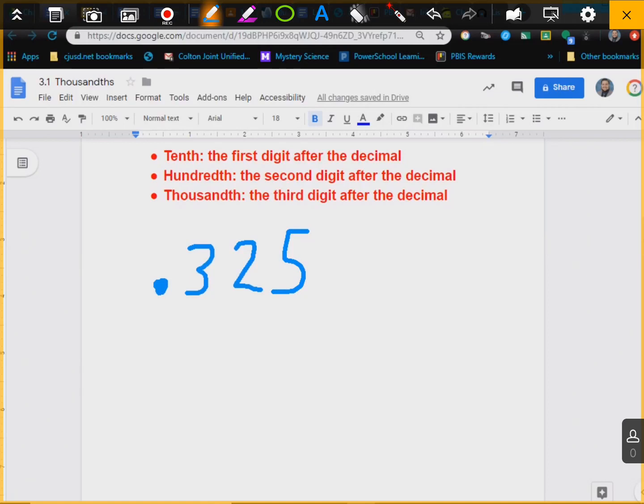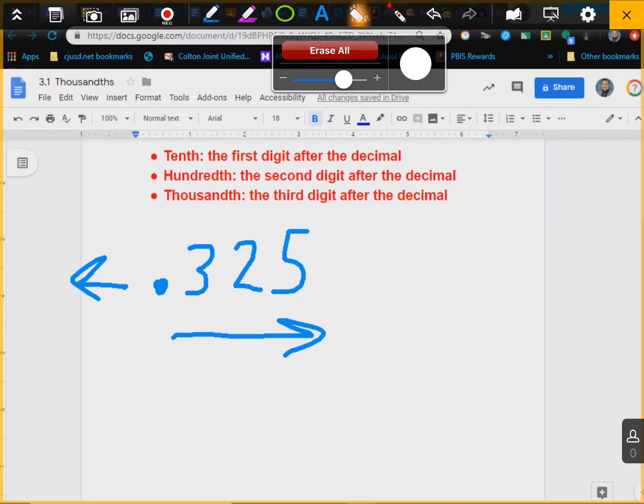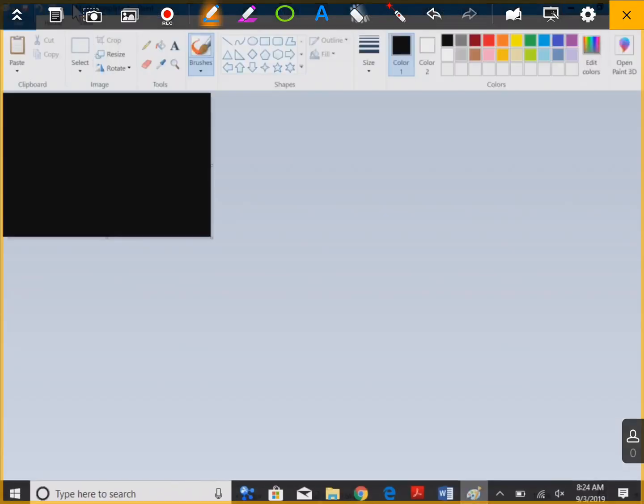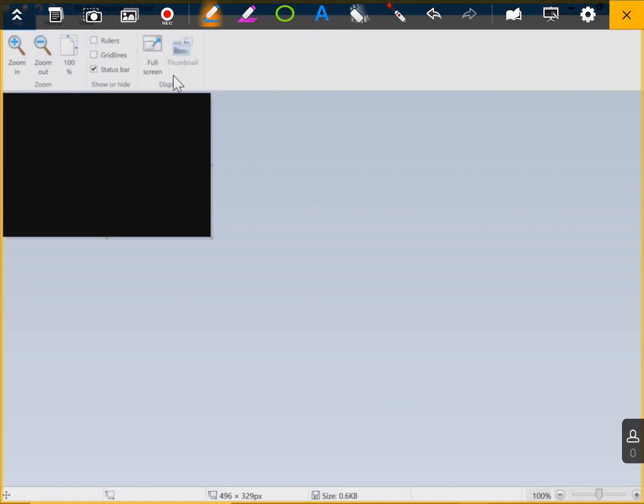It just gets smaller and smaller the further you go past the decimal. Just like if you go this way, on this side of the decimal, it gets bigger and bigger. So let's go ahead and look at an example. These examples are very similar to what you would see in, that we've done it before. We just haven't done it with decimals, so it should look very similar.